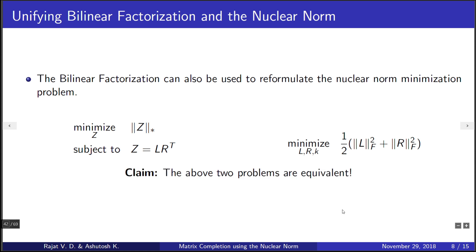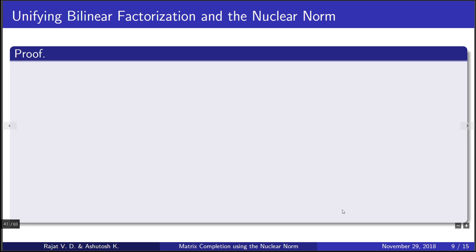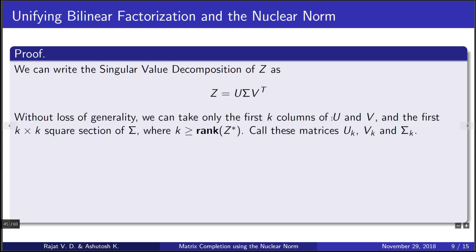Now let us prove this. Consider singular value decomposition of Z as U into Sigma into V transpose, where U and V are orthogonal matrices and Sigma is a rectangular matrix with the singular values as entries of its principal diagonal. Without loss of generality, we can take only the first k columns of U and V and the first k cross k square section of Sigma, where k is greater than or equal to the minimum possible rank. Let us set L equals U_k times square root of Sigma_k, and R equals V_k times square root of Sigma_k, so that Z is a product of a fat and a tall matrix.